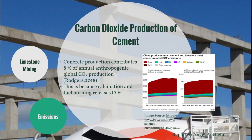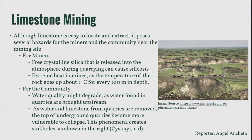Other hazards include limestone mining and other emissions of cement production. Limestone is easy to locate and extract but poses several hazards for miners and nearby communities. For miners, free crystalline silica released during quarrying can cause silicosis, which scars the lungs. Another hazard is extreme heat in mines, as temperature increases about 1 degree Celsius for every 100 meters in depth. For the community, water quality might degrade near mining sites. Furthermore, as water and limestone from quarries are removed, the top of underground quarries can become more vulnerable to collapse, creating sinkholes.